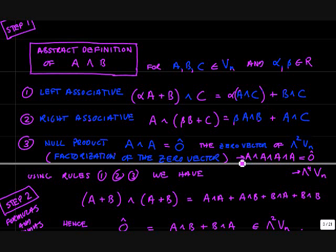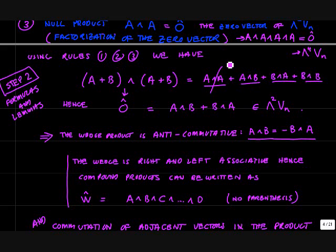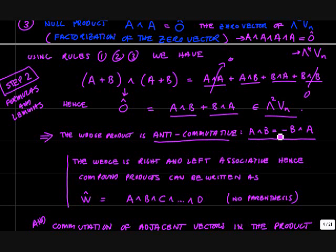Now, you may have noticed that there's nothing in these rules explicitly saying that A wedge B equals minus B wedge A — but you get that right away. Just take (A + B) wedge itself. That wedge product is zero by rule three. Then using the distributive left and right rules, you can expand this product. The two self-wedge terms vanish, and you end up with A wedge B plus B wedge A equals zero. So the wedge product is anti-commutative: A wedge B equals minus B wedge A.